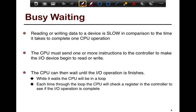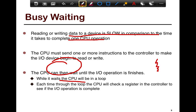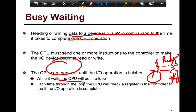So if you were to busy wait — what is busy waiting? If your device is slow in comparison to the time it takes for one CPU operation, the CPU has the option of waiting by sitting in a for loop. It contacts the I/O device and just keeps pinging it every cycle, asking 'are you ready?' If the I/O device is not ready, the CPU sits in a tight loop just checking that register.